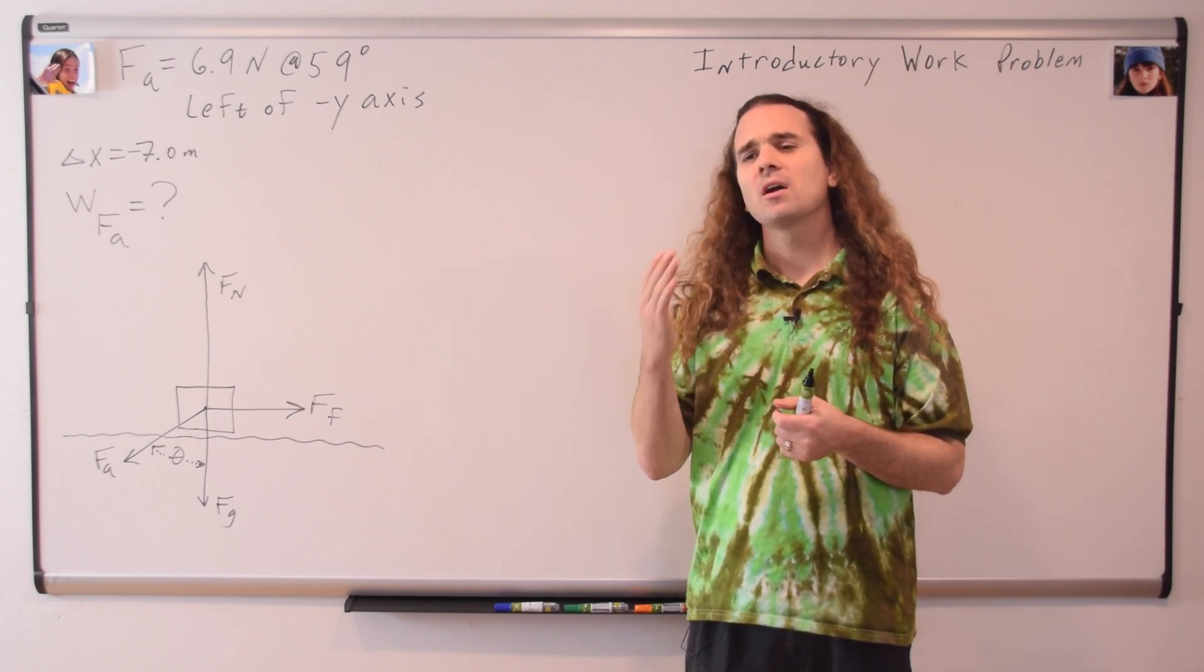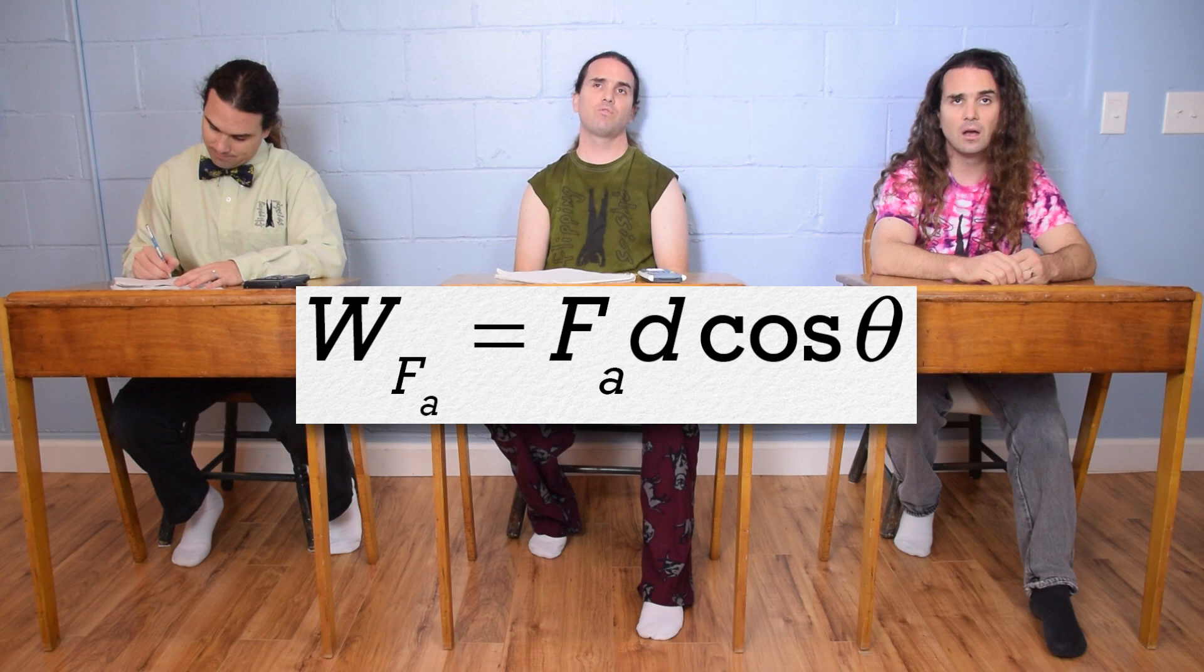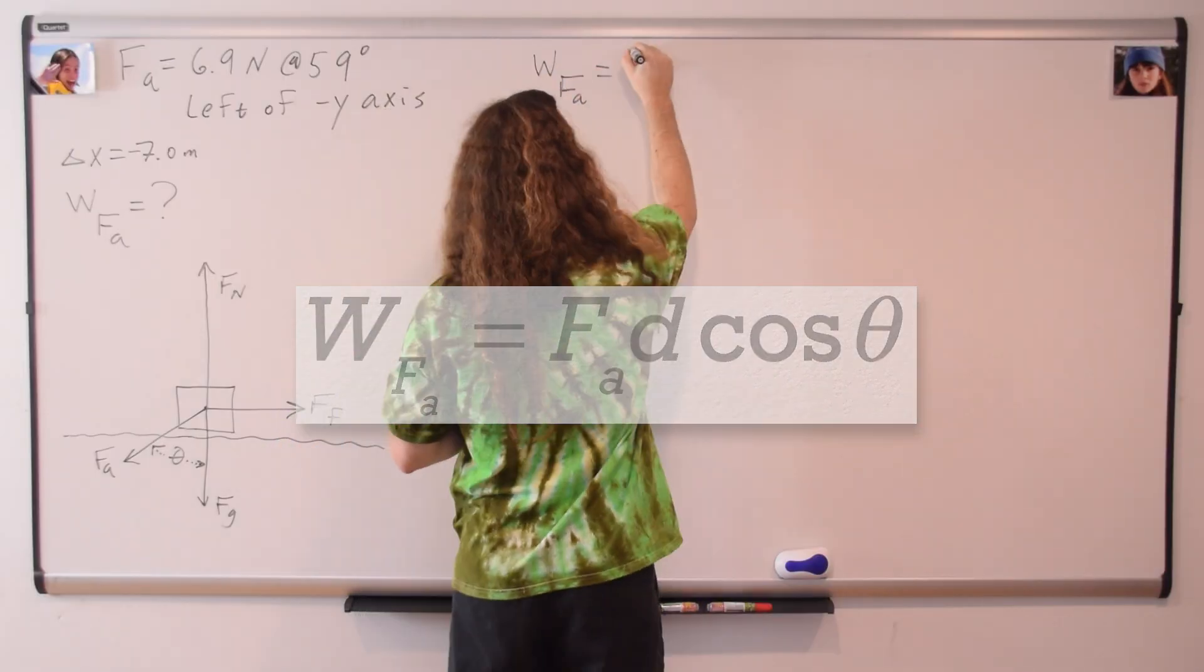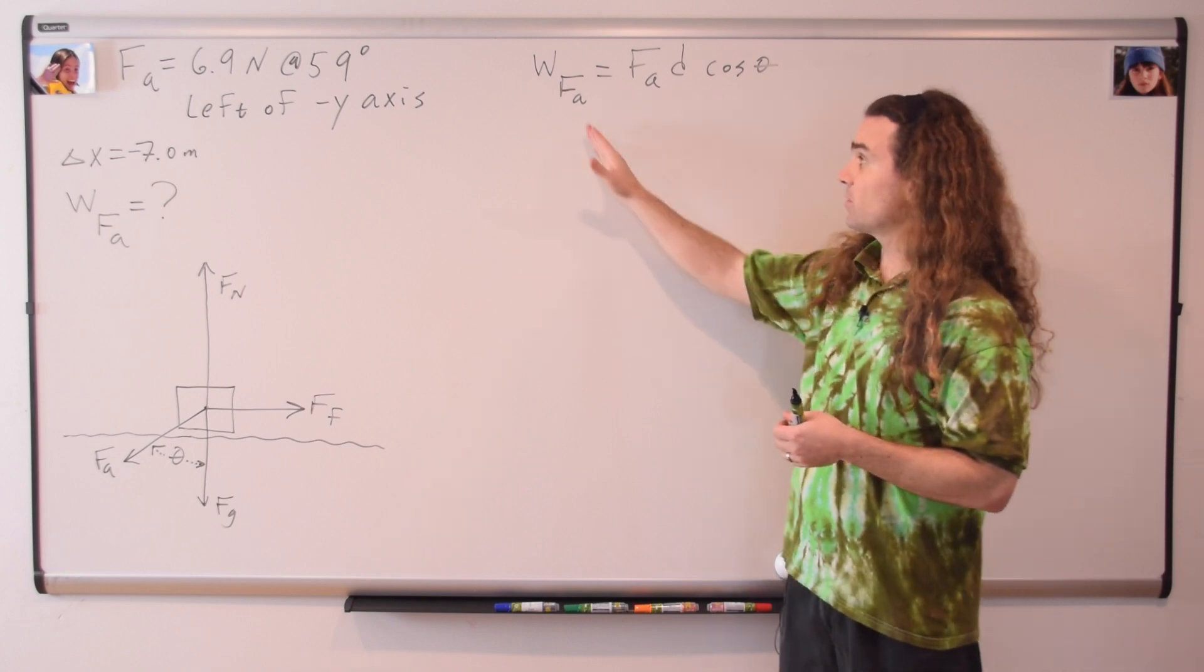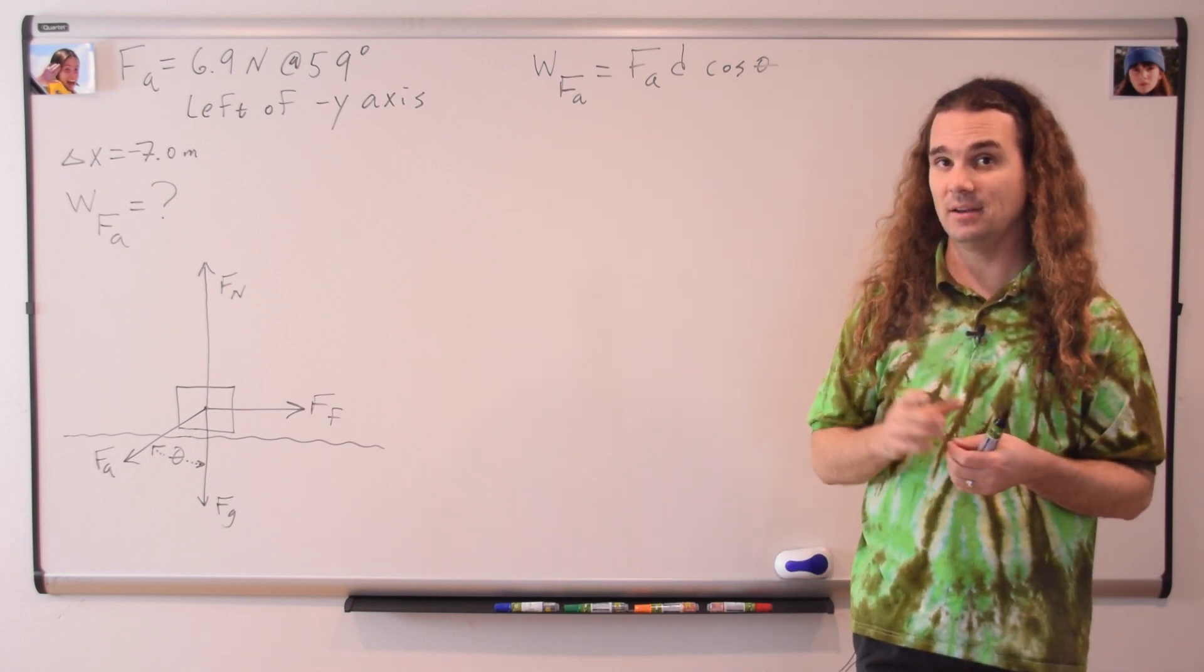Mr. P: Speaking of the equation for work, Bobby, could you please give us the work equation? Work equals force times displacement times cosine theta. Notice I added subscripts for the force applied, because we are solving for the work done by the force applied.